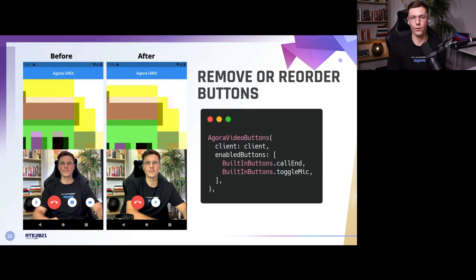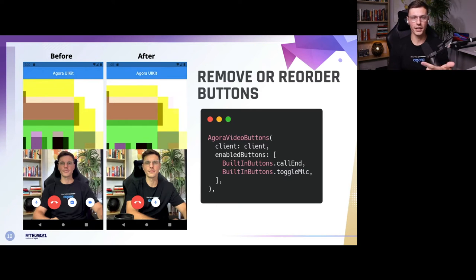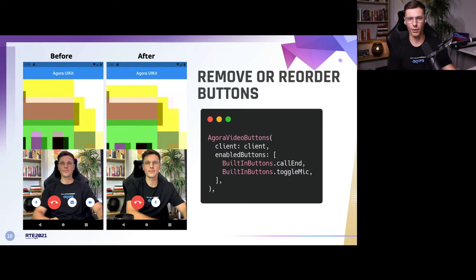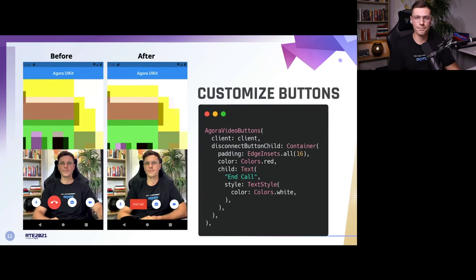We have an enumeration called BuiltInButtons that defines all the ones already included. By default you have four buttons: mute, end call, switch camera, and toggle camera. You can reorder or remove those — like in the example on the right, we have the end call as the first button and then the toggle mic. Notice the toggle mic was before the end call button originally, but now we've set it to appear after using this enumeration.